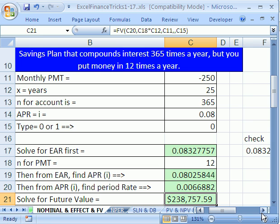And there you have it. That's how to go from being paid 365 times a year interest and you're only putting money in 12 times a year. All right, we'll see you next Excel Finance trick.